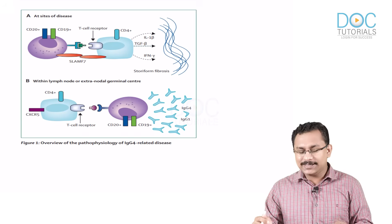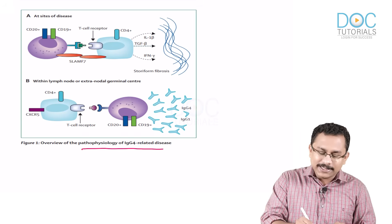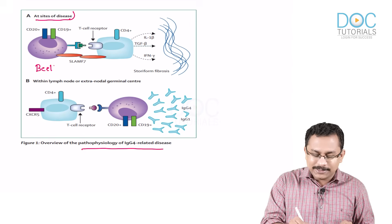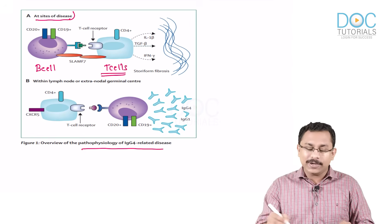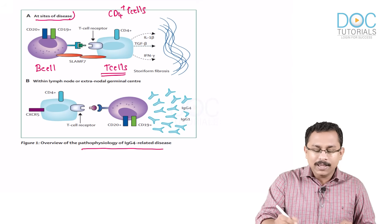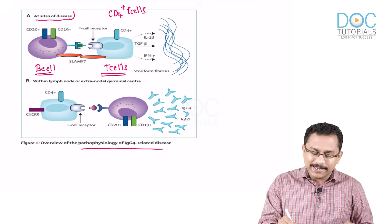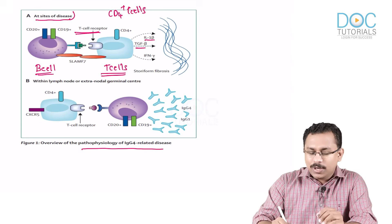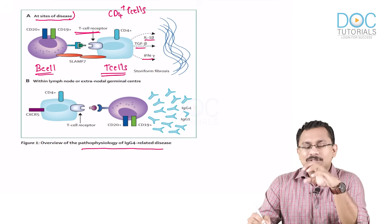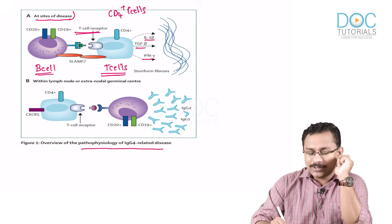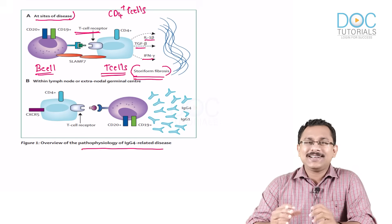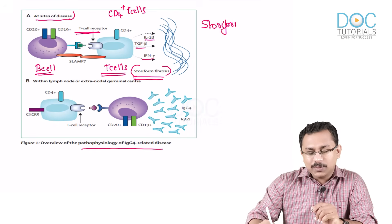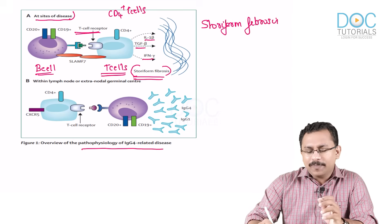Looking at the pathogenesis of IgG4-related disease: at the various sites of disease, it is the CD4 T cells that are most important. There is an interaction between B cells and T cells via the T cell receptor, with subsequent production of cytokines like interleukin-1-beta, TGF-beta, and interferon-gamma. These cytokines drive a fibrotic process referred to as a storiform pattern of fibrosis.